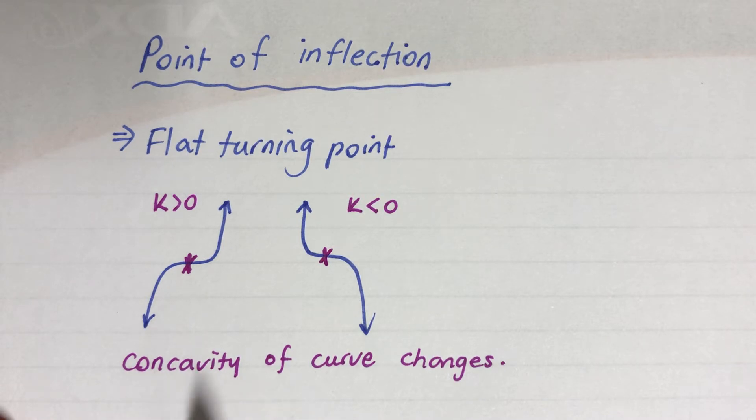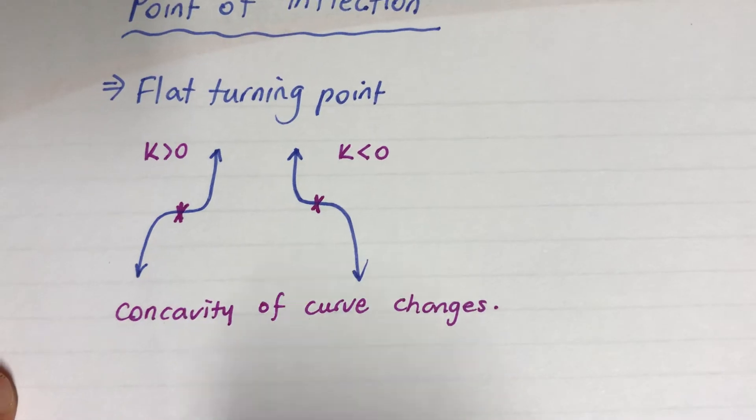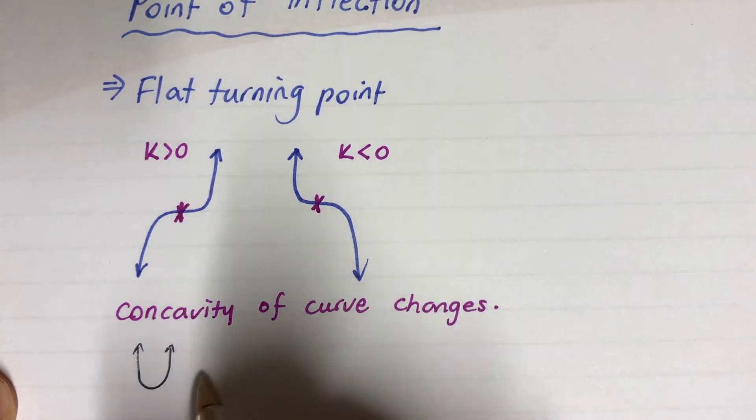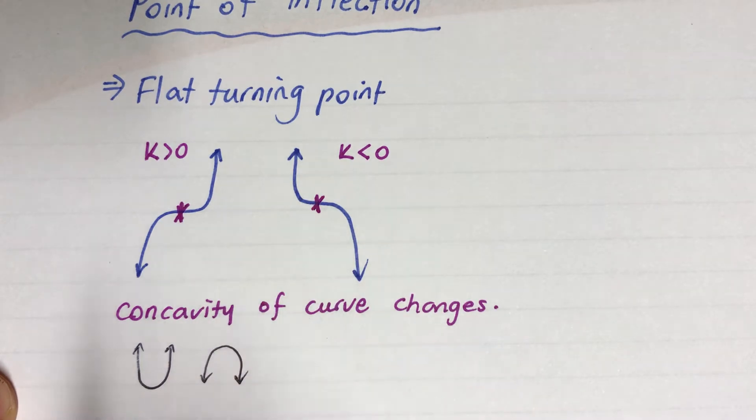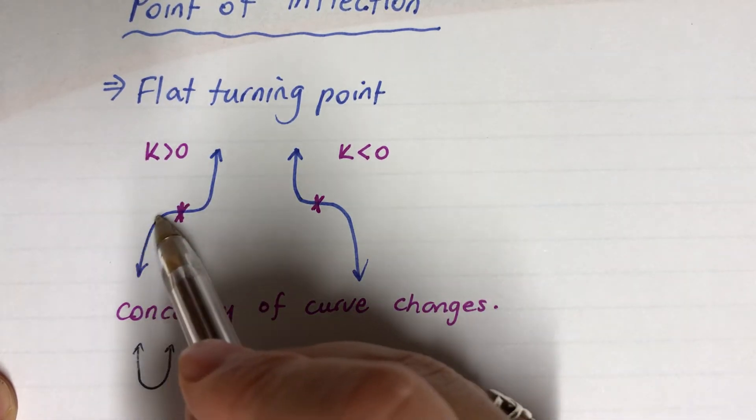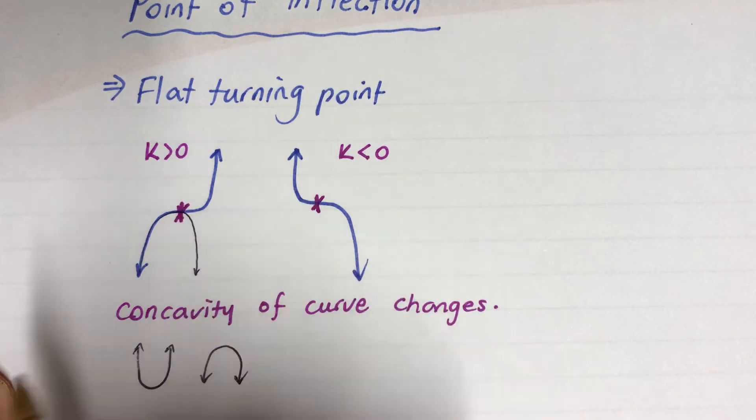Remember concave up and concave down. Concave up was like this, and concave down like that. The shape will change. For example, this is concave down and that's concave up.